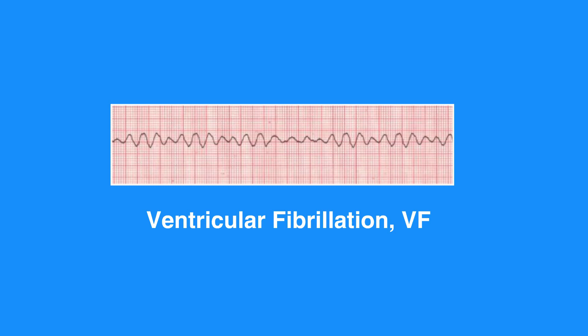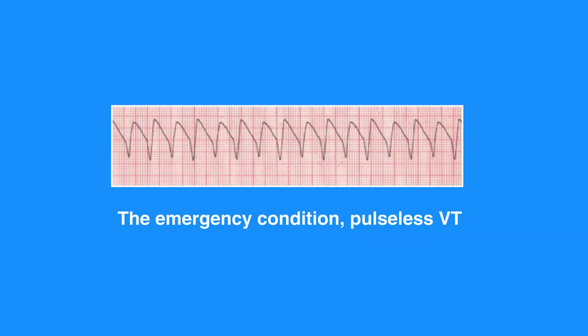VT is a condition in which the ventricles contract more than 100 times per minute. The emergency condition of pulseless VT occurs when ventricular contraction is so rapid that there is no time for the heart to refill, resulting in an undetectable pulse. In both cases, the individual is not receiving adequate blood flow to the tissues.